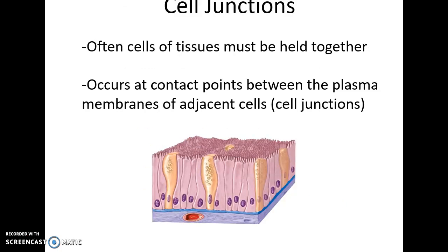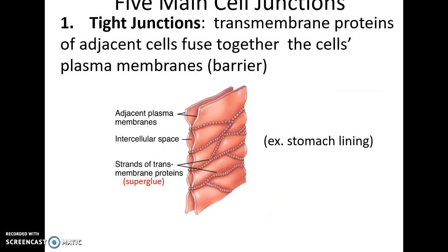Cell junctions are where cells come together and attach to each other. This is very important for some tissues to have cells tightly attached and making connections. There's the tight junction, where transmembrane proteins of adjacent cells attach to each other tightly and fuse the membranes, forming a barrier to prevent things from going between the cells. Think of it as superglue.